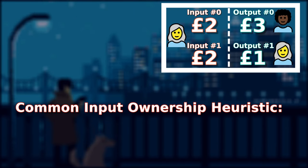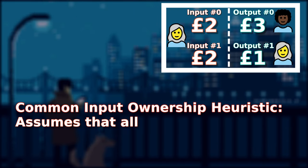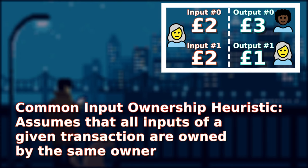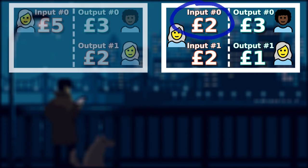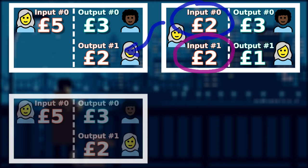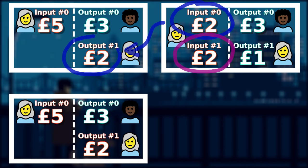Common input ownership heuristic assumes that all inputs of a given transaction are owned by the same owner. In this case, if we didn't know it was Alice who made the transaction, we could still apply the heuristic and assume the owner of the two £2 coins are from the same entity. Since we know those two £2 coins are from Alice, we could follow the coin's upstream history and learn more about where it came from and where it was spent previously.